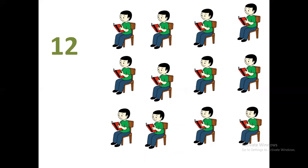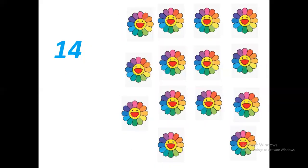One, two, three, four, five, six, seven, eight, nine, ten, eleven, twelve. Twelve is correct. Next: one, two, three, four, five, six, seven, eight, nine, ten, eleven, twelve, thirteen, fourteen. Fourteen. Great!